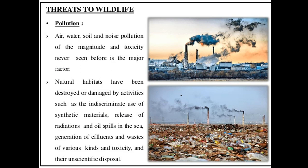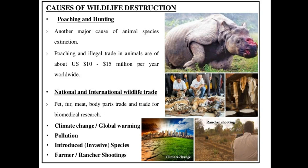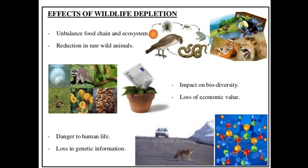Another anthropogenic problem is pollution — land, air, water, or soil pollution. Human beings have released synthetic materials, radiation, and other things into the environment, thereby polluting it. This pollution directly affects wildlife. Habitat loss is also important, especially the clearing of rainforests for timber or coal. Estimates say we have 20% less forest cover today than existed 300 years ago. Poaching, hunting, and national and international wildlife trade have also threatened wildlife.